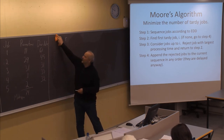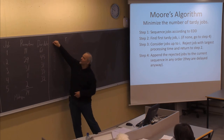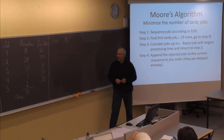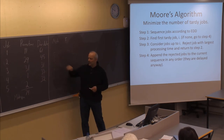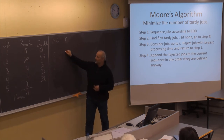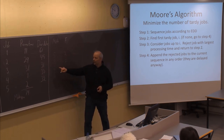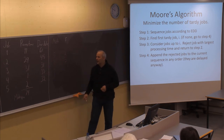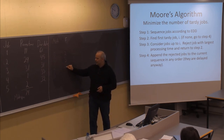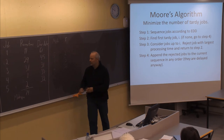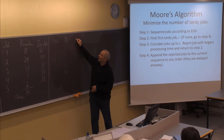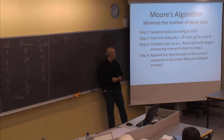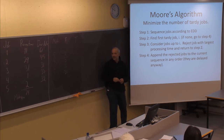Using Moore's algorithm, we start the sequence with job number five, which takes two days. Job number four will take one more day, giving 3. Job number two will take 29 more days, finished by 32. And job number one, 11 days, finished by 43. Looking at tardiness, none of these jobs are delayed.